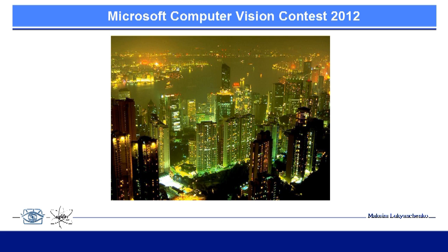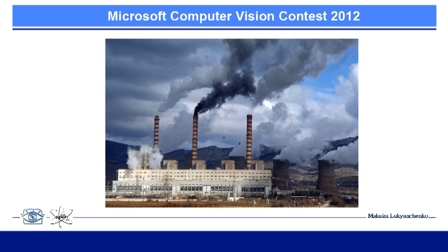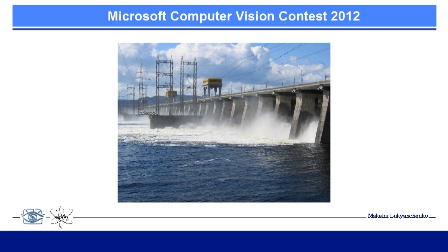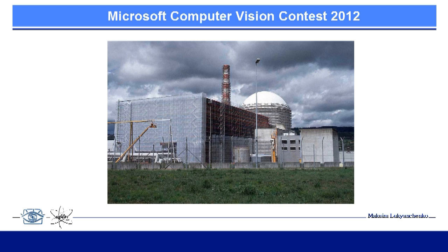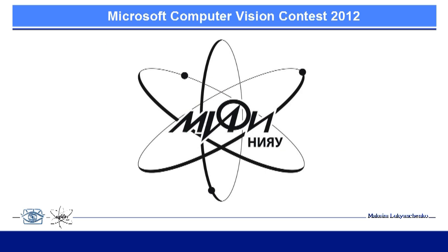The population of the East, as we know, is constantly growing, and at the same time the number of consumed energy is growing. There are several ways to get electricity: coal fire power plants, hydropower plants, marine plants, and nuclear power plants. I am a student of the National Research Nuclear University, so my research is related to nuclear power plants.